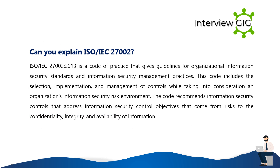Can you explain ISO/IEC 27002? ISO/IEC 27002:2013 is a code of practice that gives guidelines for organizational information security standards and information security management practices. It includes the selection, implementation, and management of controls, taking into account an organization's information security risk environment. It recommends controls addressing objectives that come from risks to the confidentiality, integrity, and availability of information.